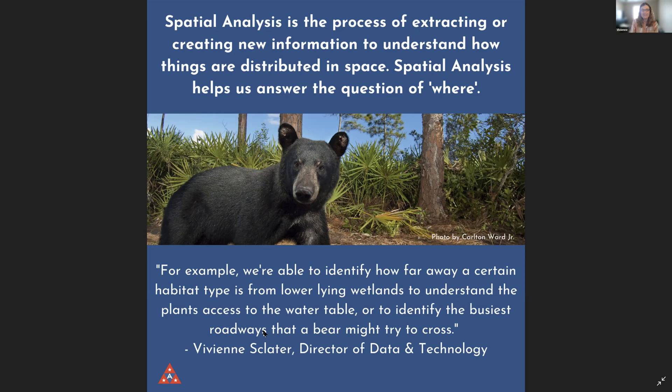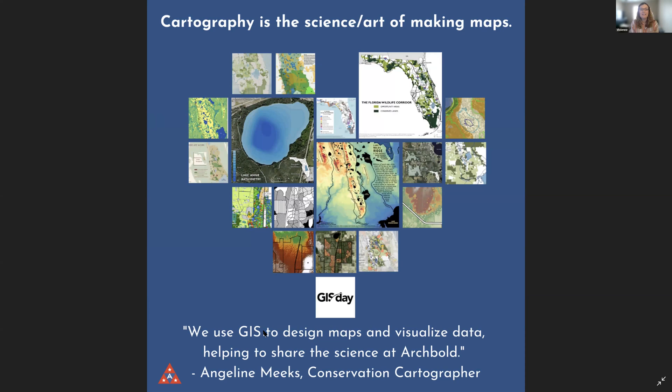And finally, cartography — the science and art of making maps. You can see a variety of different maps here: Lake Annie, elevation data around the station, the elevation of the Lake Wales Ridge, and the Florida Wildlife Corridor map, which shows areas that wildlife needs to be conserved so they can move through.